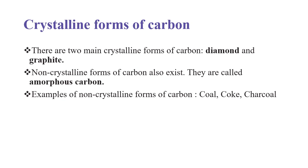About the allotropes of carbon, we have to know the two main words. Allotropes of carbon are divided into two. One is called the crystalline forms of carbon. Another is called the non-crystalline forms of carbon. The crystalline forms of carbon are the forms which have a regular structure.